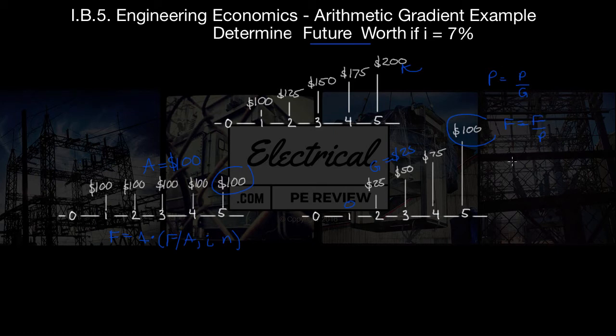And that would look something like this. That would be F equals G times P given G times F given P. So now our future worth of our gradient is going to equal F equals G times P given G at an interest of i over period of n.